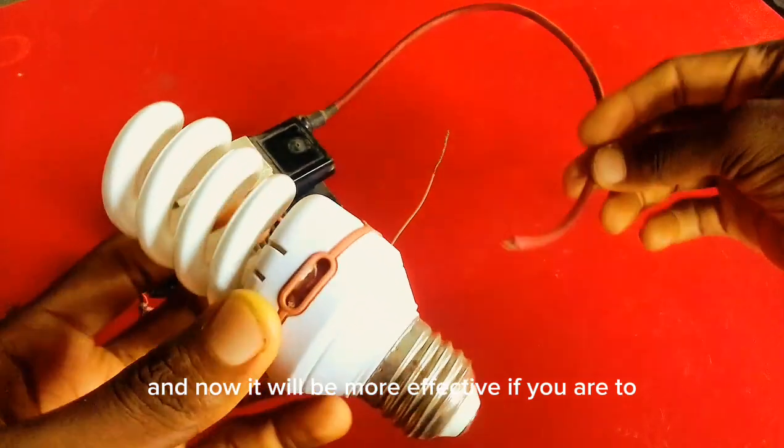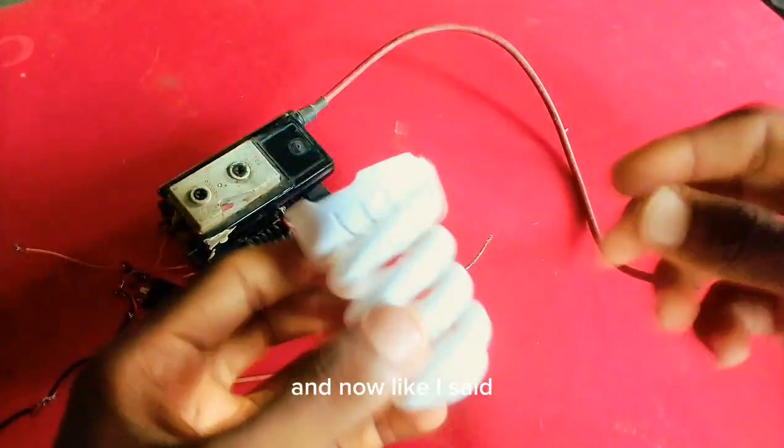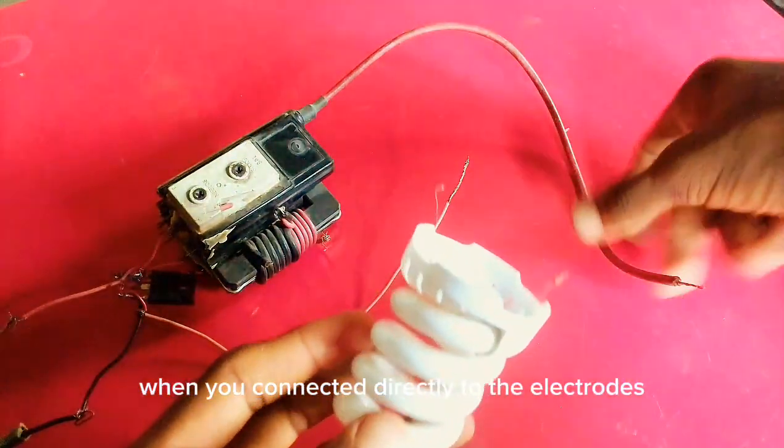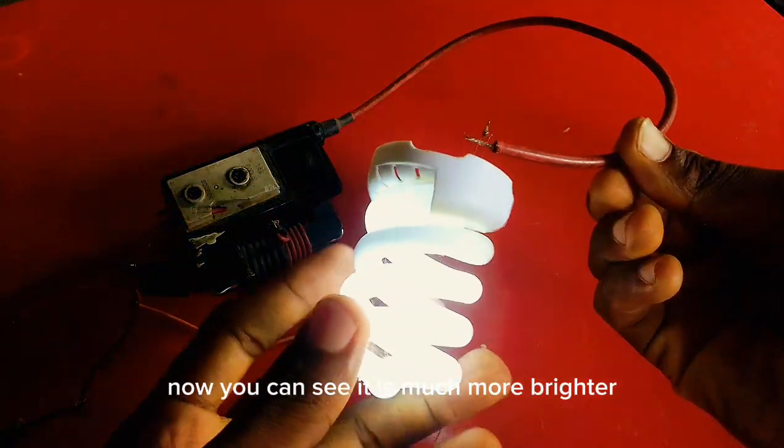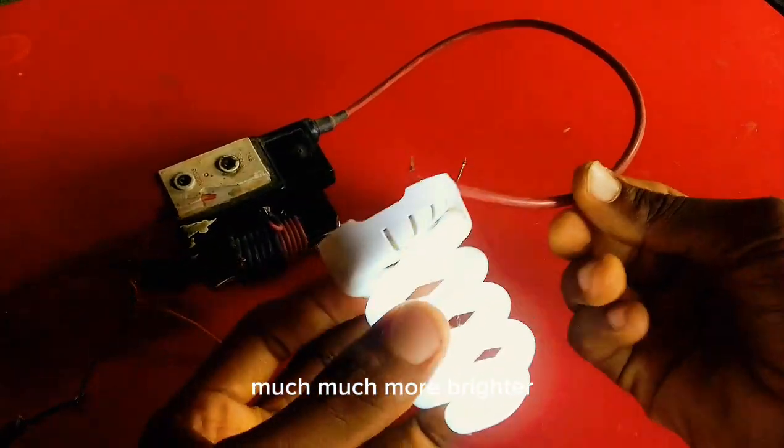And now it will be more effective if you open this up. Let me just quickly open it up. It will be more effective when you connect it directly to the electrodes of this fluorescent tube. Now you can see it's much more brighter.